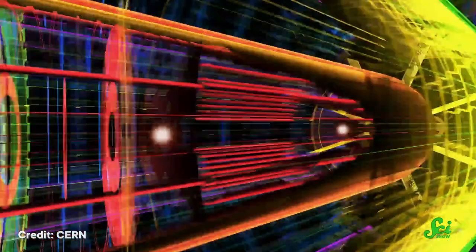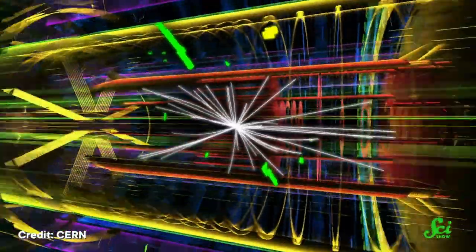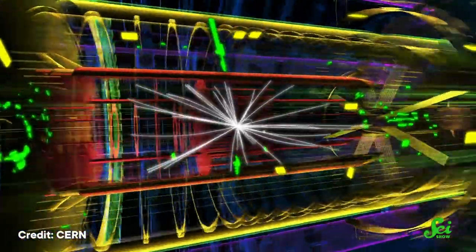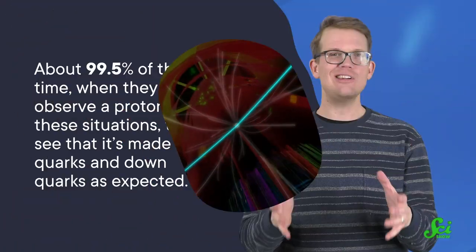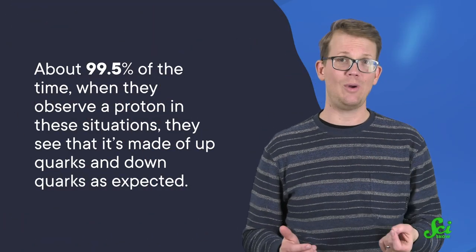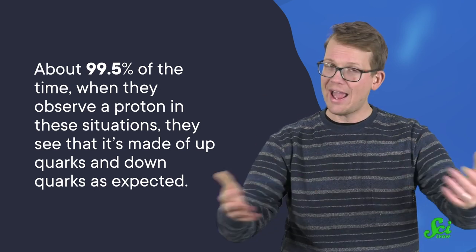On this teeny-tiny scale of reality, everything comes down to probabilities. Physicists use equations to describe the possible outcomes for which quarks they will see when they observe a proton. They do this by smashing protons together at high speeds, and watching which particles are formed from all that energy. About 99.5% of the time, when they observe a proton in these situations, they see that it's made of up-quarks and down-quarks, as expected.